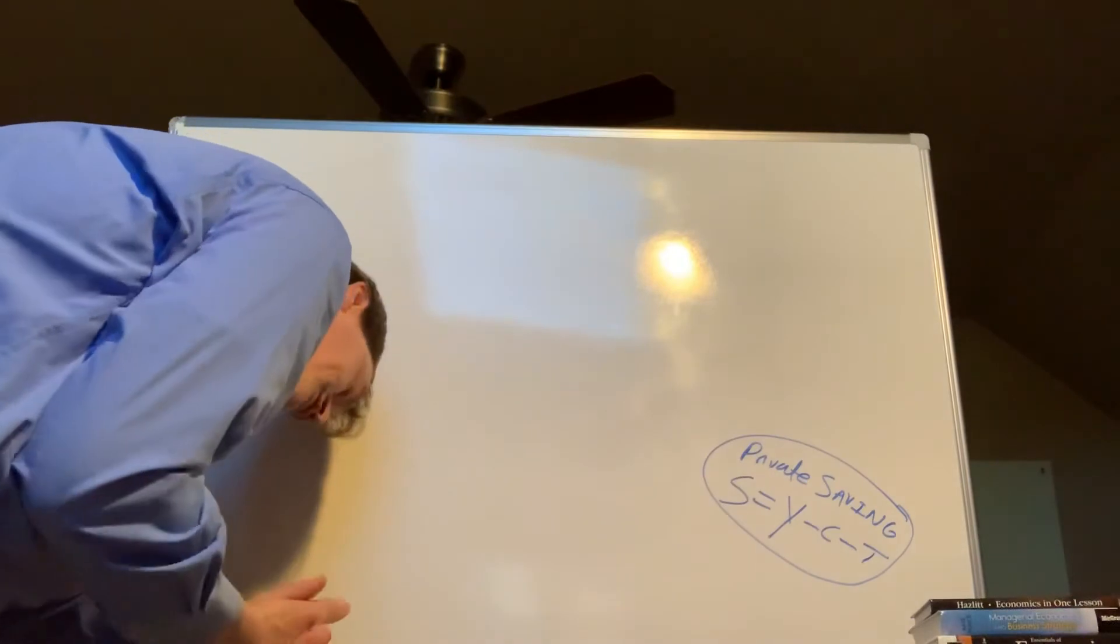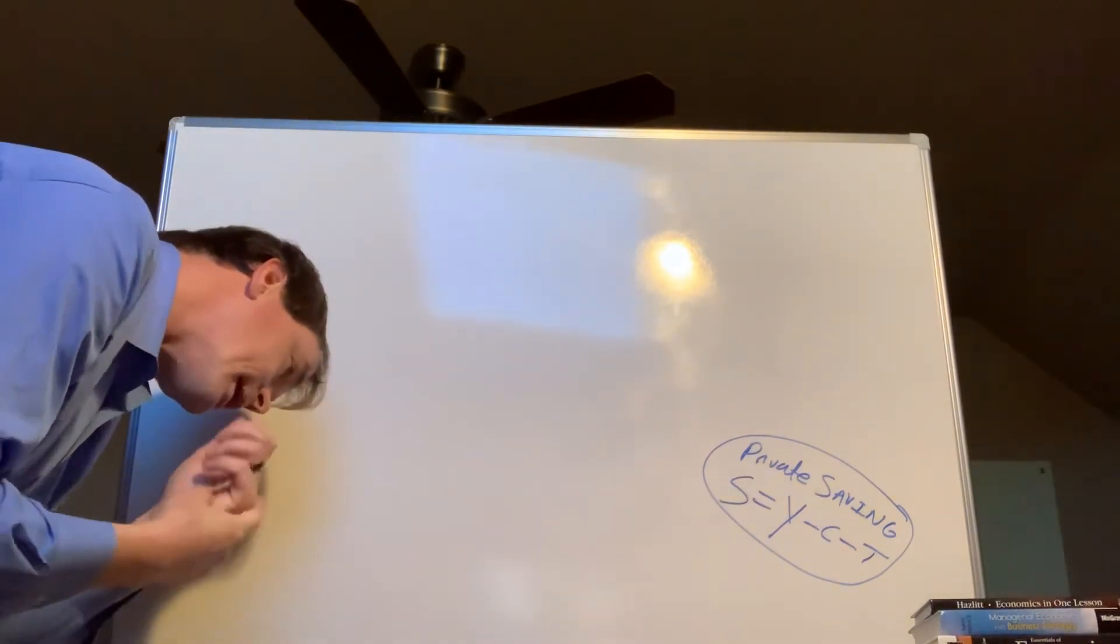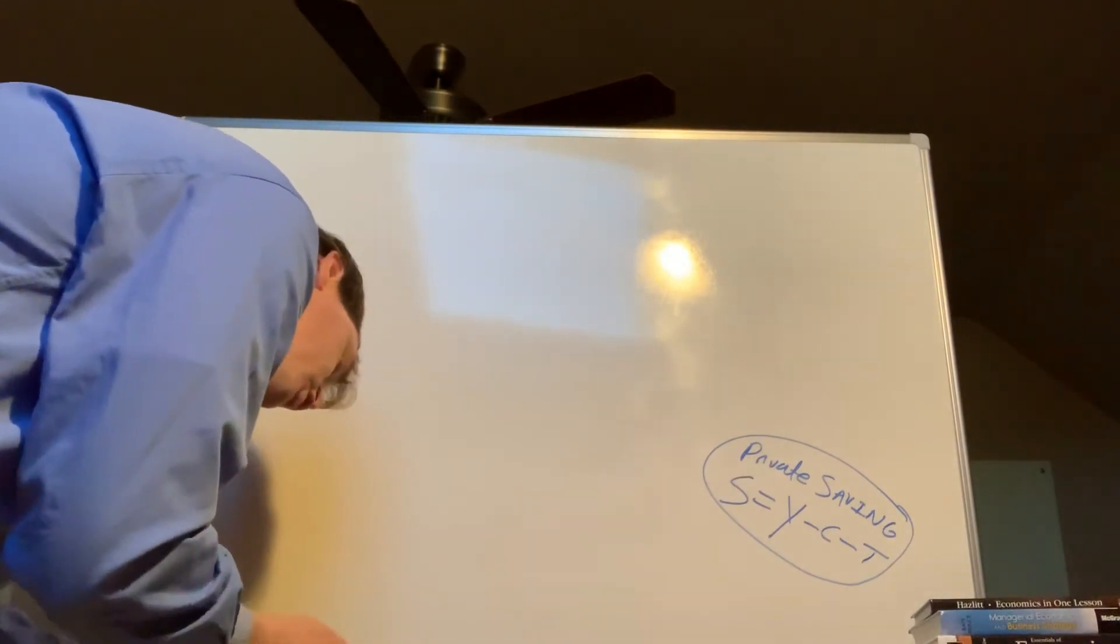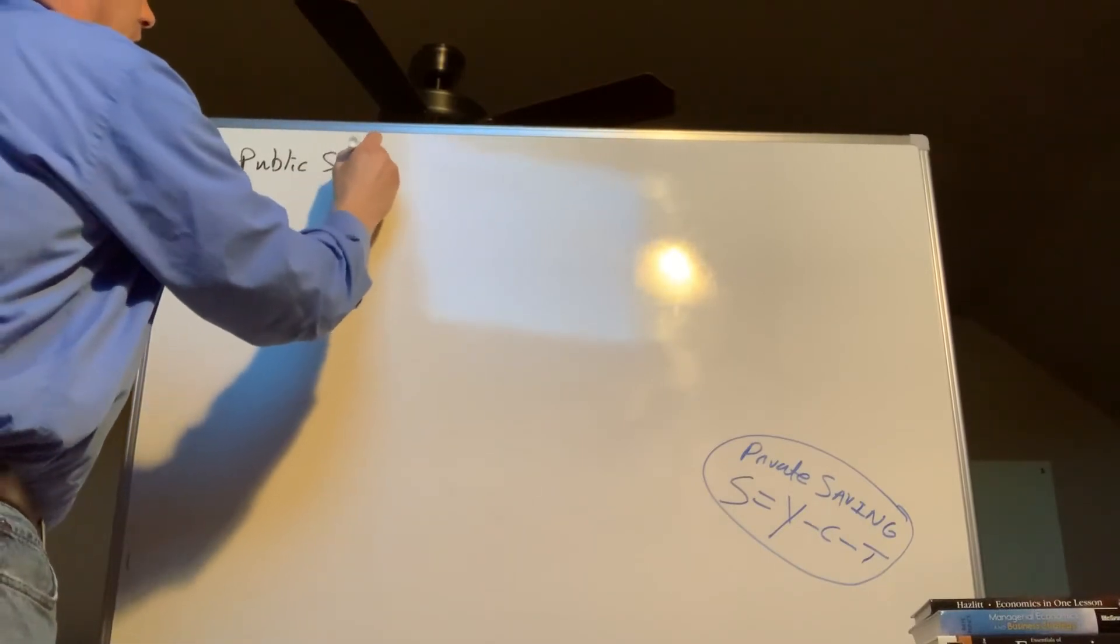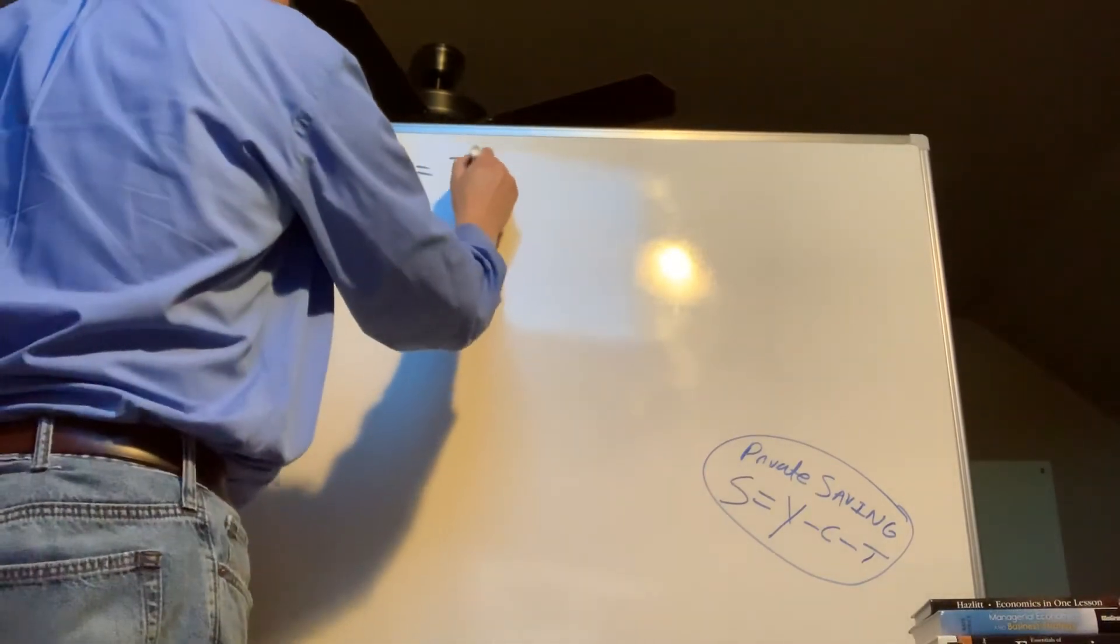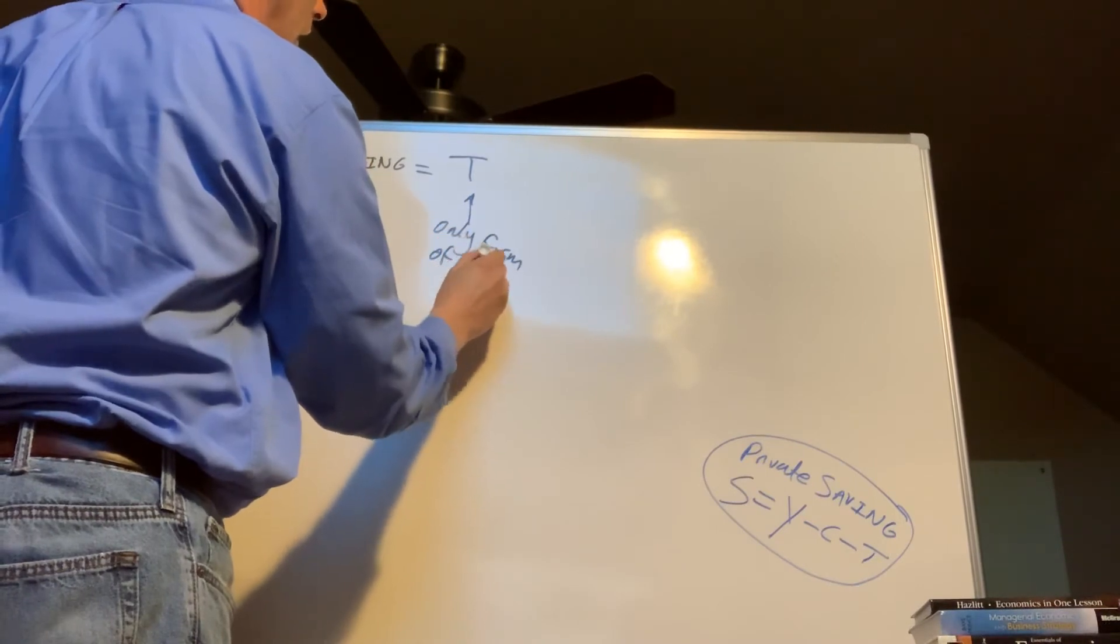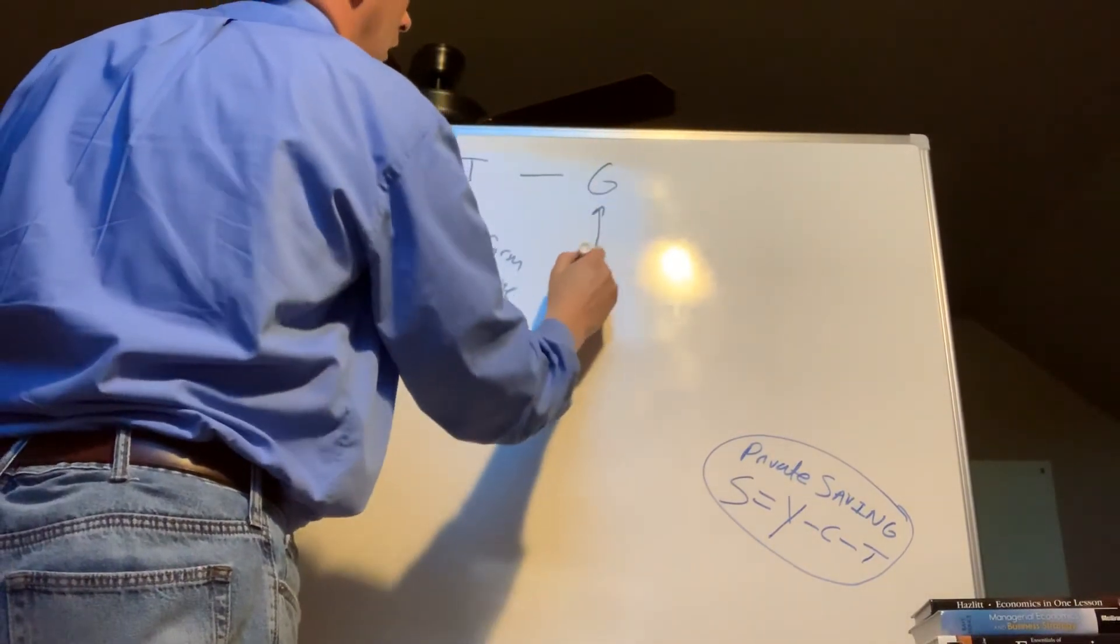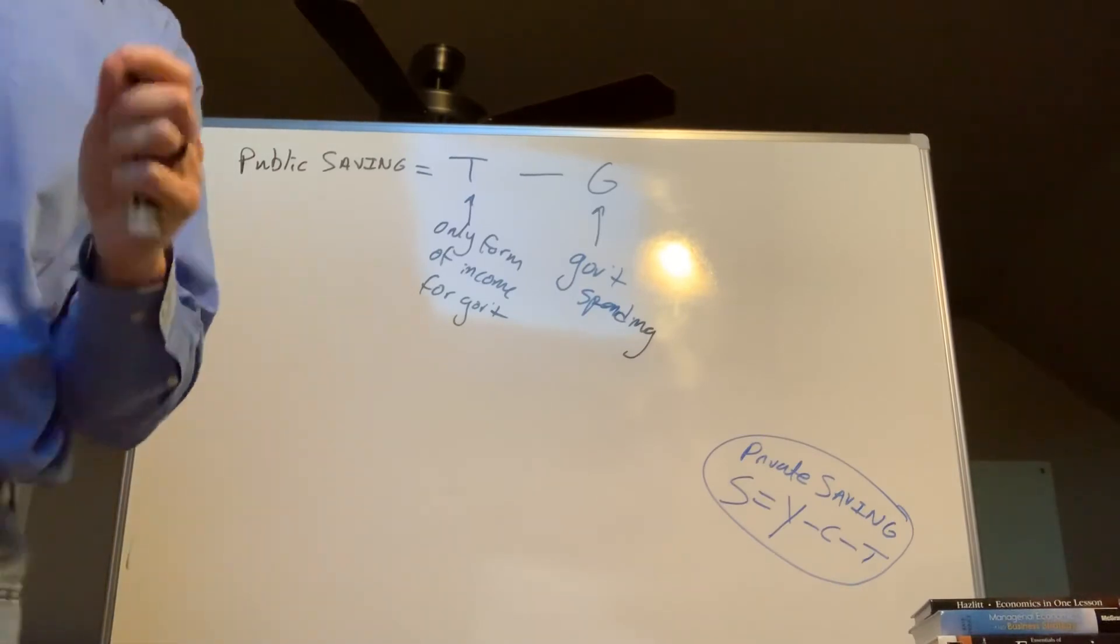So if this is private saving, which is the income that households have left over after paying taxes and consumption, let's talk about public saving. Public saving is, your public saving, it's actually quite simple. You don't have to derive it like we did with that. Your public saving is where you take your taxes. That's your only income, only form of income for a government. It's minus your government spending. T minus G is your public savings. So whatever you have left over is what they can save.